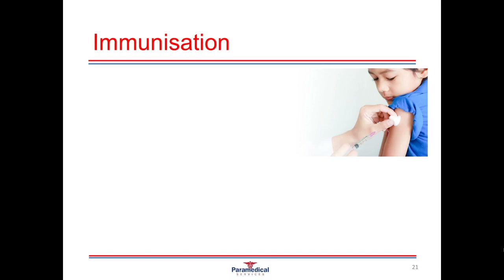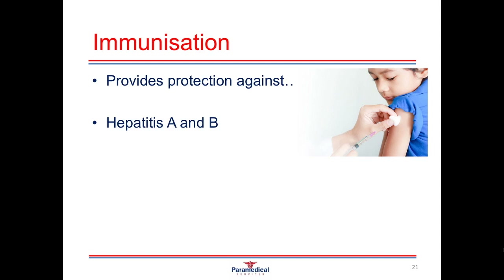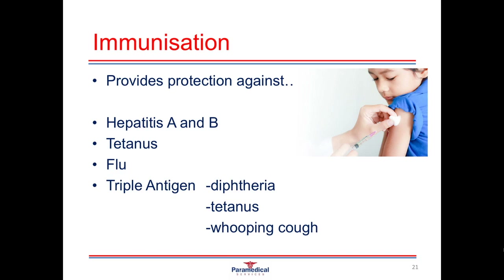Immunizations also help protect you against many of the pathogens you'll come into contact with as a healthcare provider. Different immunizations help protect you against things such as hepatitis A and B, tetanus, the flu virus, and you may also get the triple antigen, which protects against diphtheria, tetanus, and whooping cough. Depending on where you work, your organization may require you to have some or all of these — or even more — to ensure that you can work safely in your work environment.